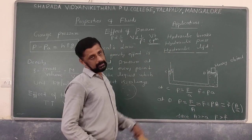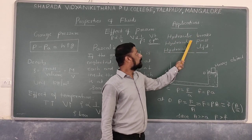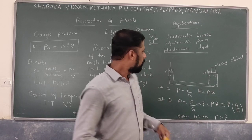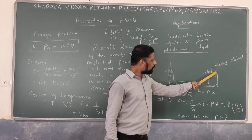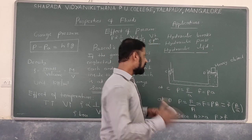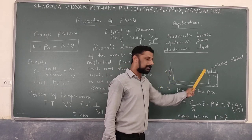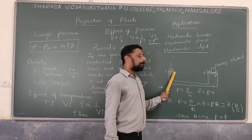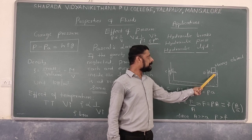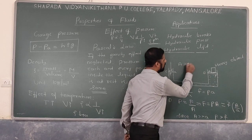Applications of Pascal's Law include hydraulic brakes, hydraulic press, and hydraulic lift. In car service stations, we use a hydraulic lift to lift a car. The hydraulic lift consists of two cylinders, C and D, each fitted with a movable piston. The piston in cylinder C has a small area of cross section 'a', and the piston in cylinder D has a large area of cross section 'A'. Capital A is very much greater than small a.